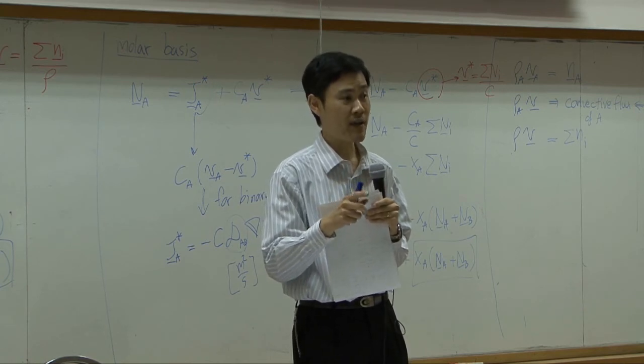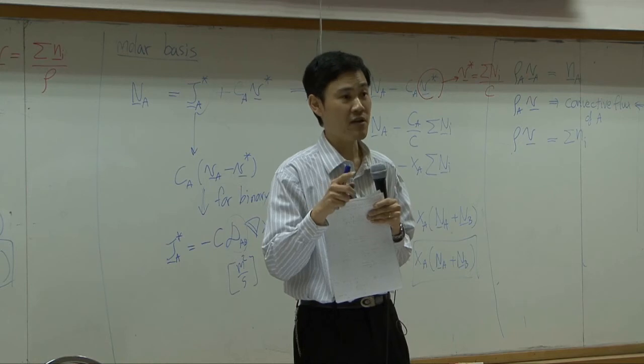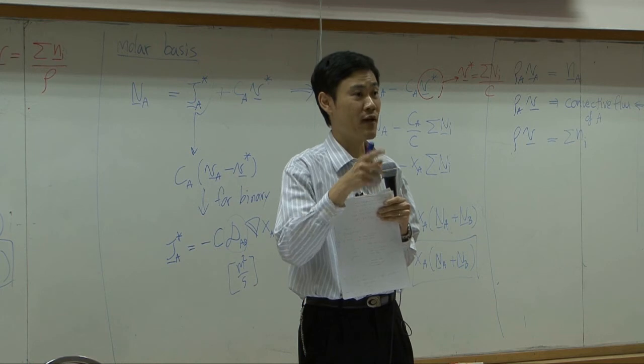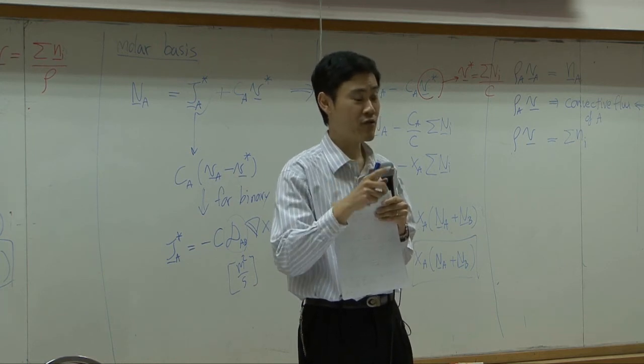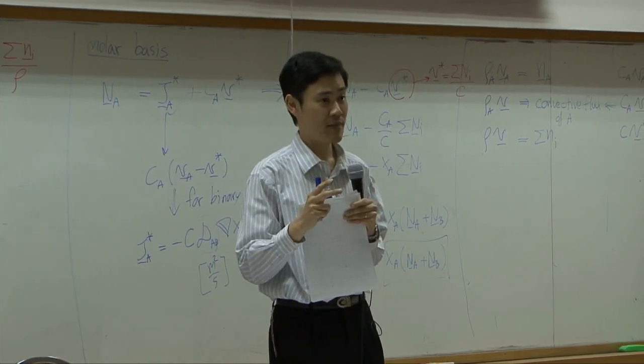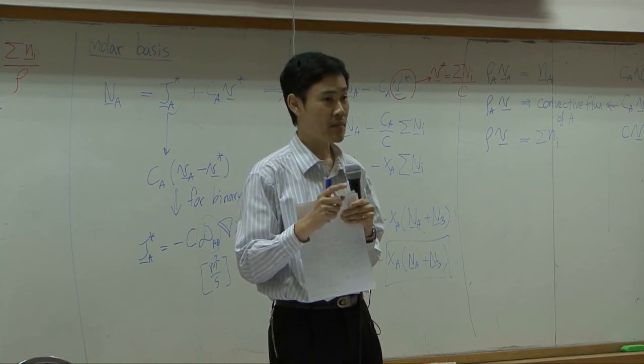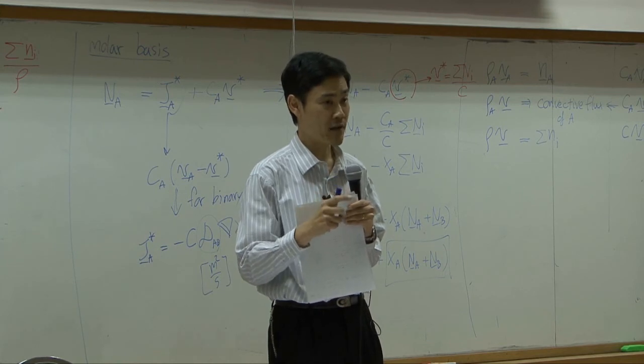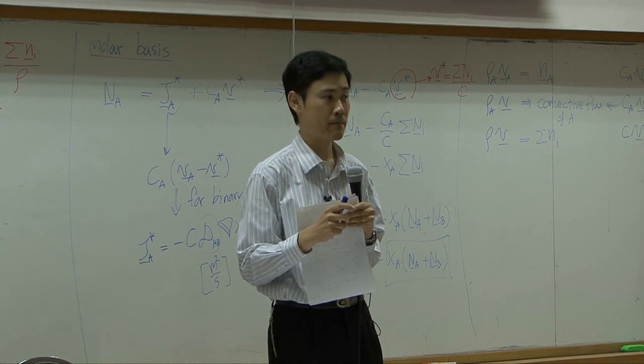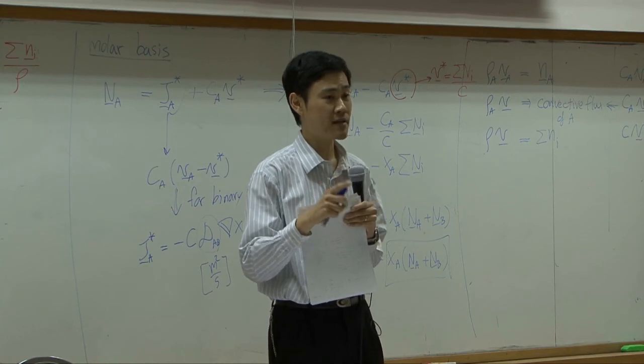However, there will be a case where you have two species in your system, but concentration in the system are uniform. Just like air here. You have oxygen, you have nitrogen, but nitrogen concentration or oxygen concentration are equal everywhere. In that case, there will be no mass transport. So don't be confused. You're looking for difference in concentration, not number of species. However, the number of species makes the problem difficult.